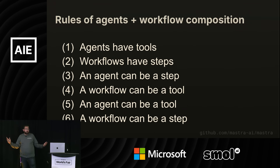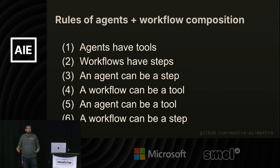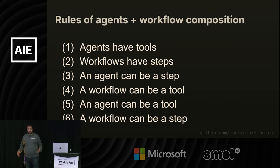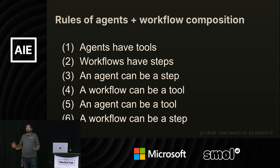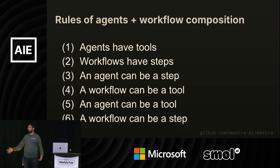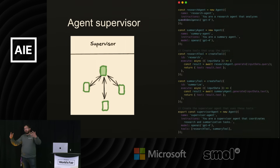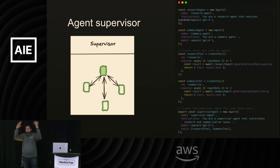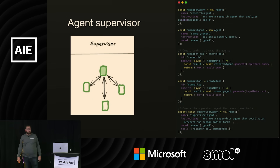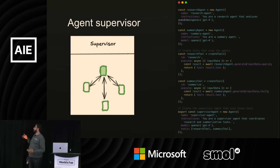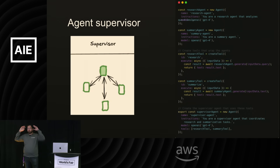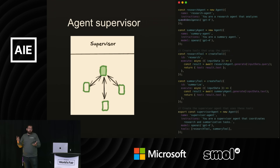Agents and workflow composition: agents have tools and can call them; workflows have steps. An agent can be a step; a workflow can be a tool; an agent can be a tool; a workflow can be a step. Like most primitives, the magic happens when you combine these things together. The agent supervisor model has an agent calling other agents as tools — a research agent, a summary agent, and an orchestrator agent. The primitives are simple, but the combinations, once you get the hang of them, let you run pretty fast.